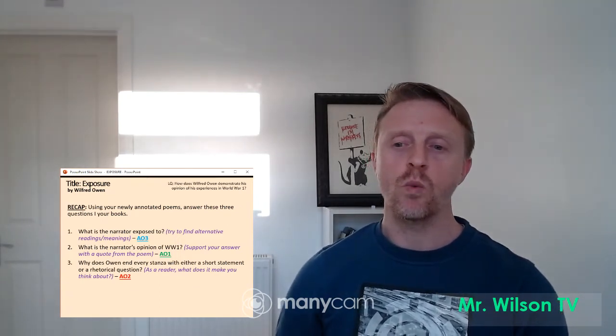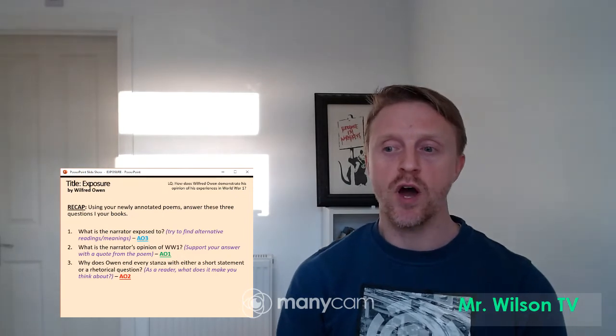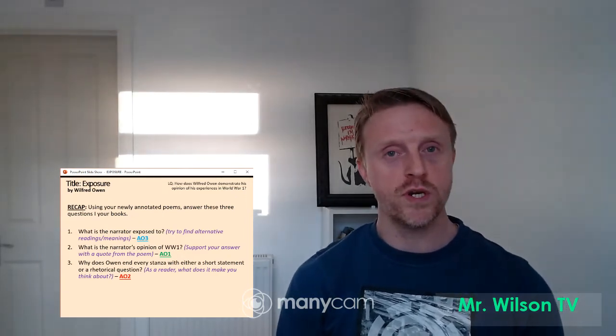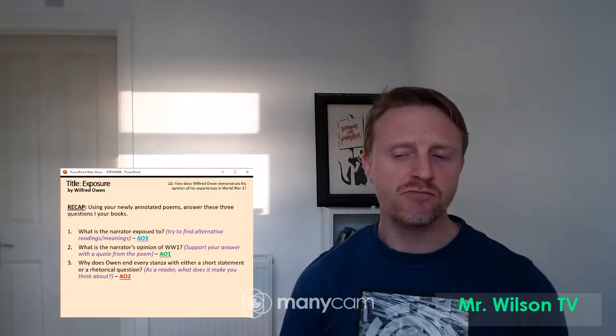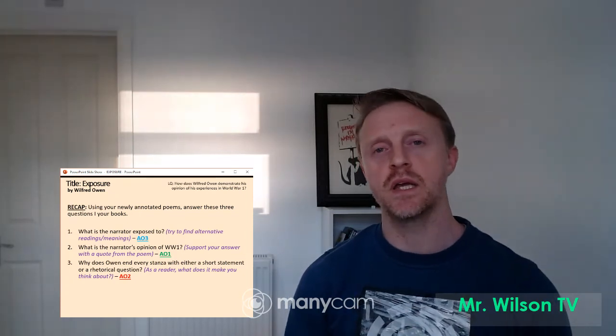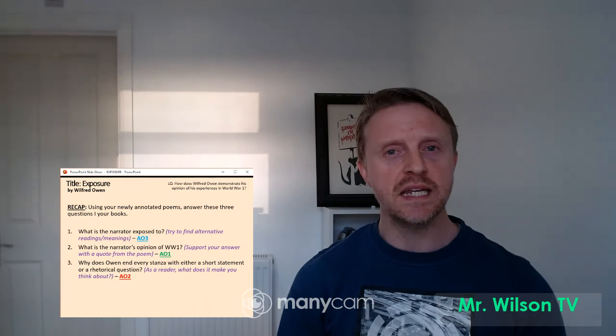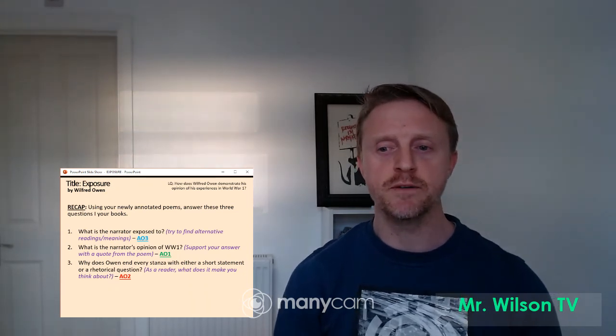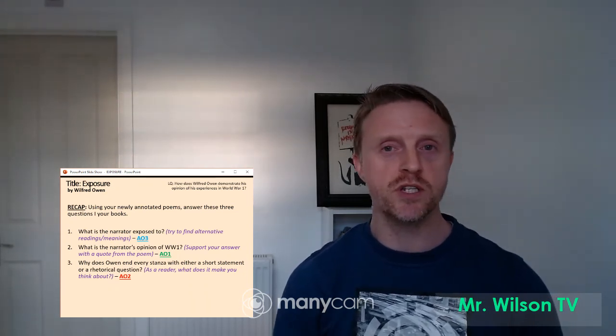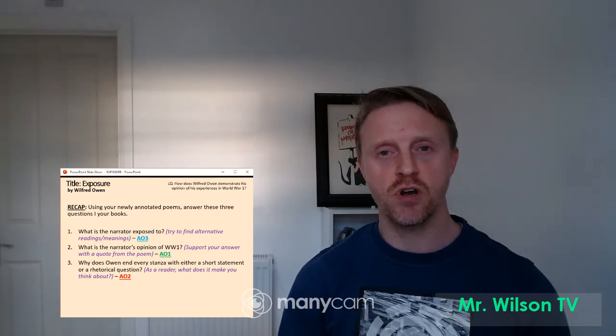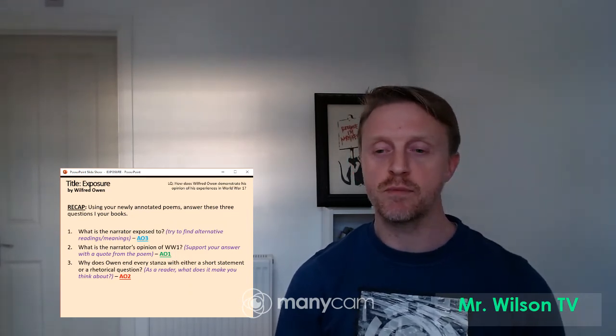And the third question is why does Owen end every stanza with either a short statement or a rhetorical question? So what does that really make us think about in this instance? So this is looking at that as a writing technique that's been chosen for a particular effect on the reader. So make sure you answer all three questions in your book and then if you can photograph these or type them straight into Google Classroom that would be fantastic.